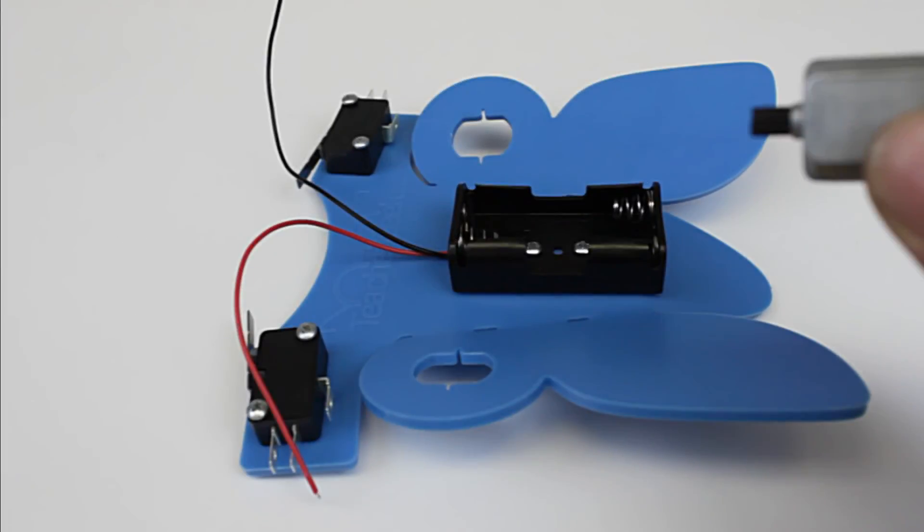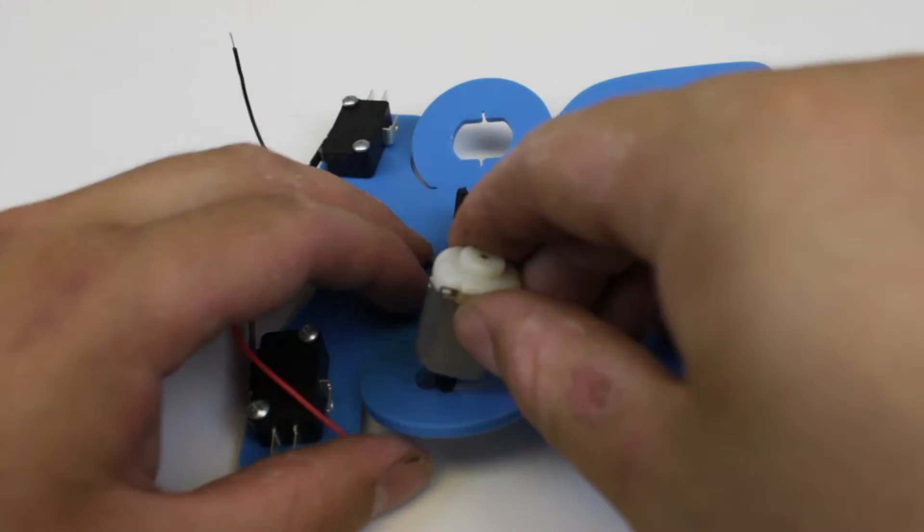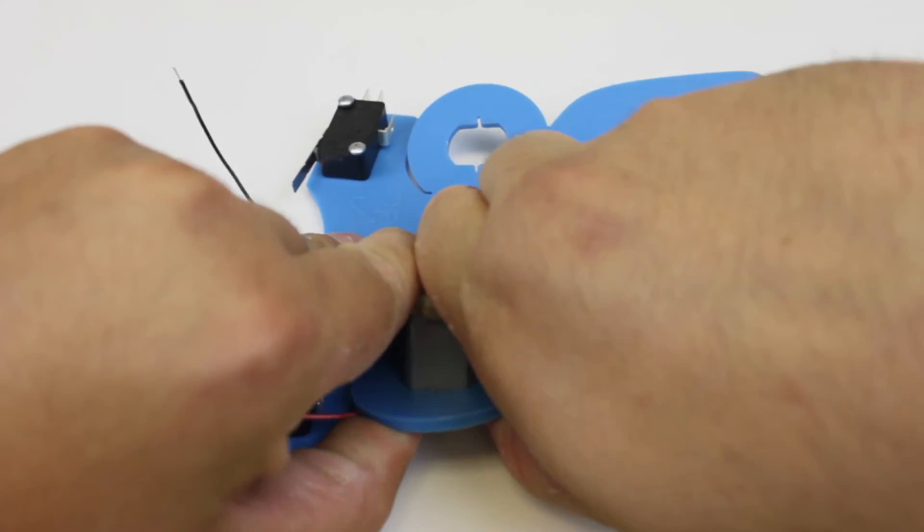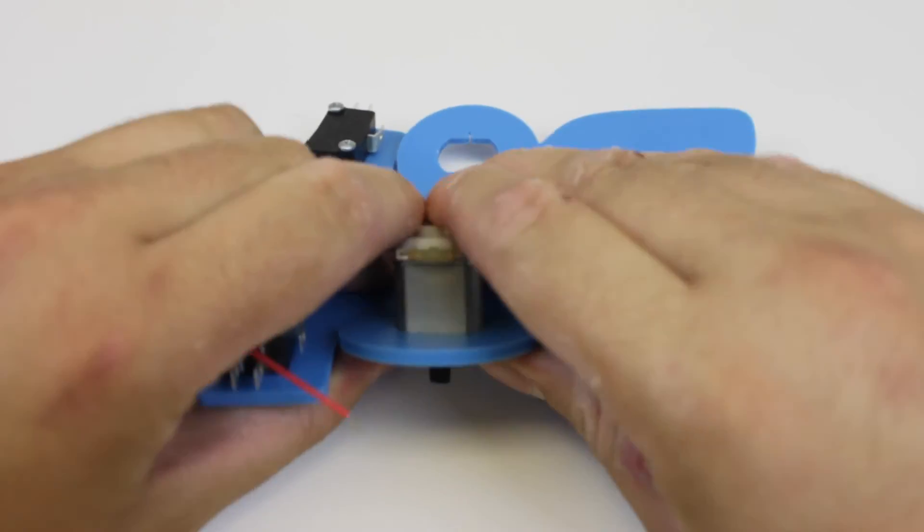Grab the motor with the tire material on it. Place it into the bug so that the copper terminals are facing out. And push it in. It's going to be a little tough but just wiggle around the motor and eventually you'll get it.